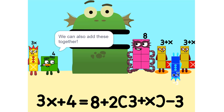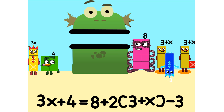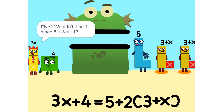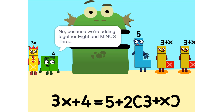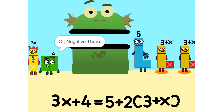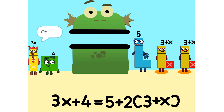We can also add these together. 5. Wouldn't it be 11 since 8 plus 3 is 11? No, because we're adding together 8 and minus 3, or negative 3. So it's 5.